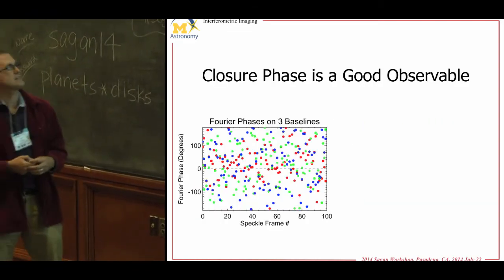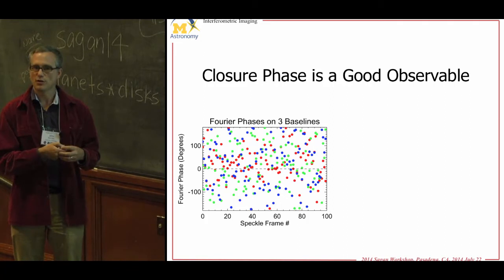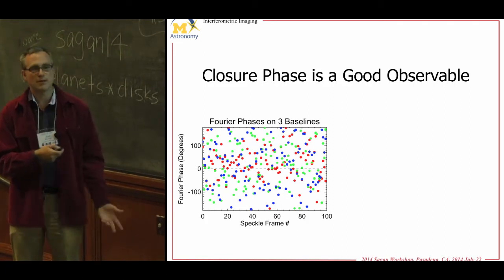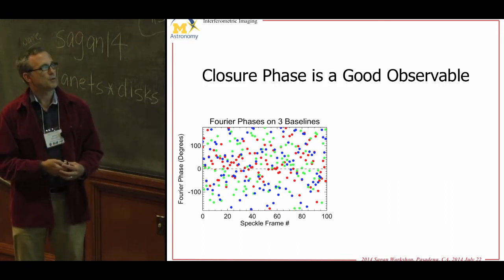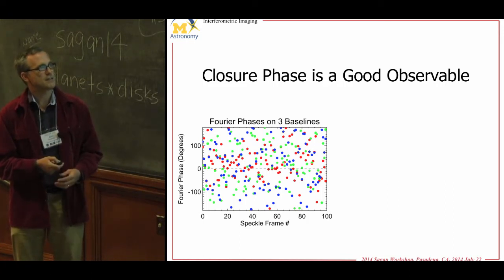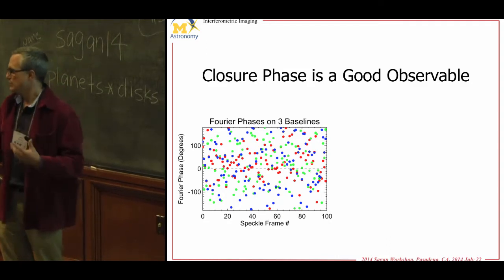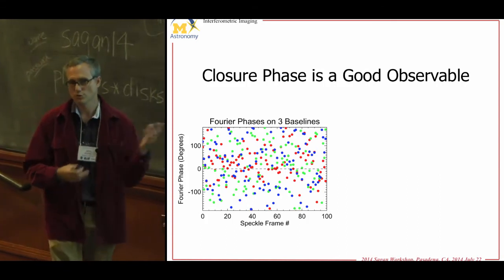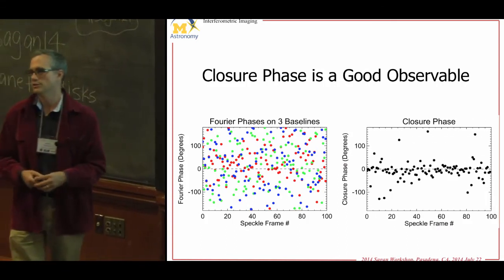Looking at phases from 100 different frames on three different baselines, you see they're all over between minus 180 and 180 — because there's no adaptive optics. But when you form the correct triangle of closure phases, you see something clustering around zero. Averaging that gives you a few-degree error bar, and doing this for a few thousand frames gives sub-degree error bars on each of those quantities.